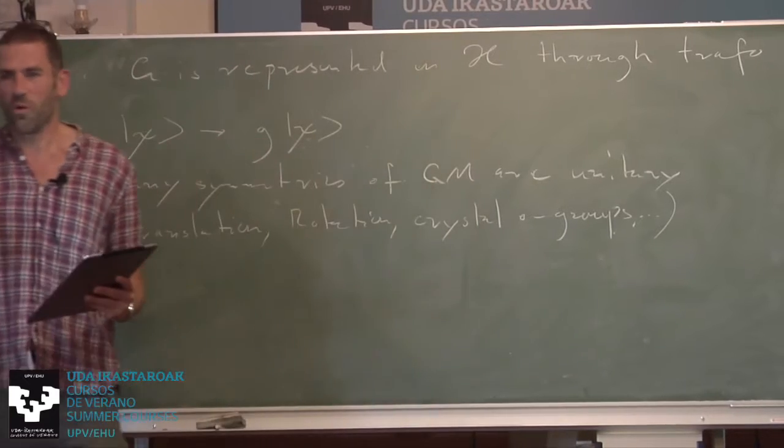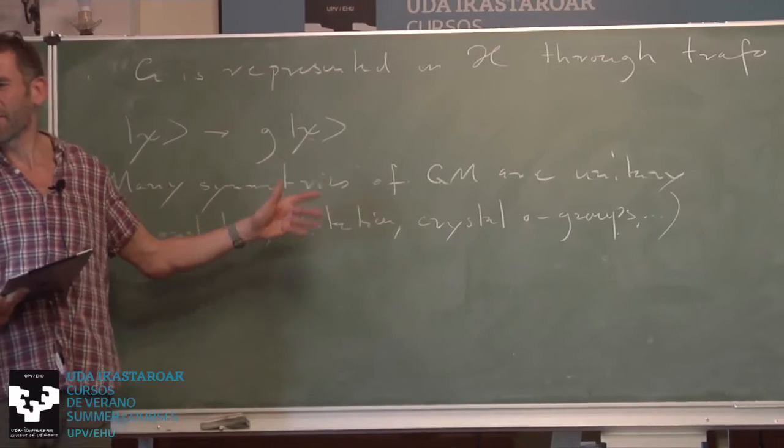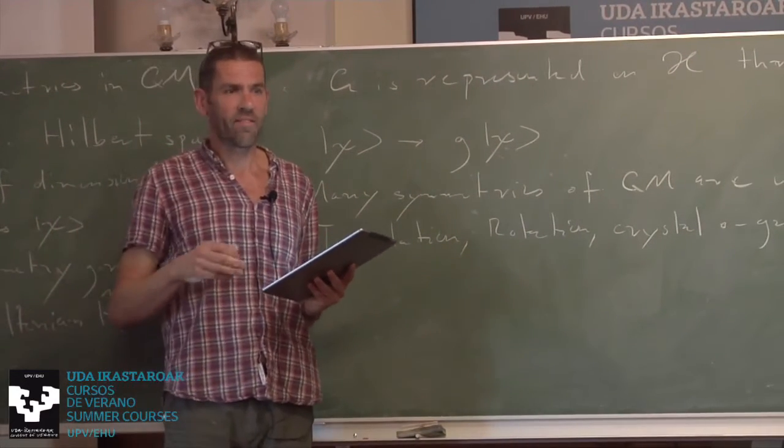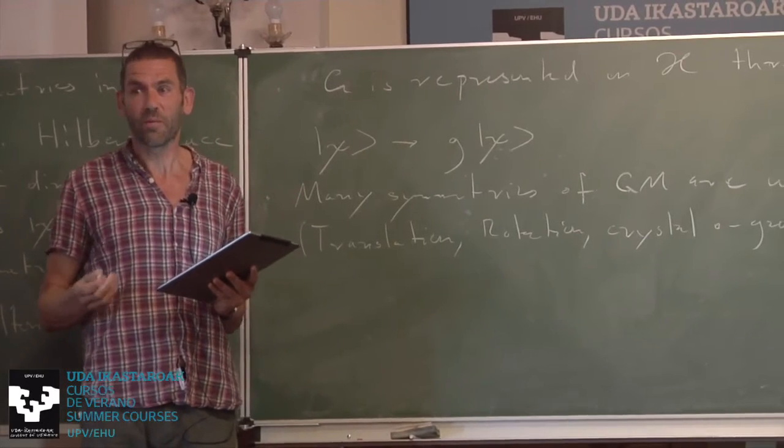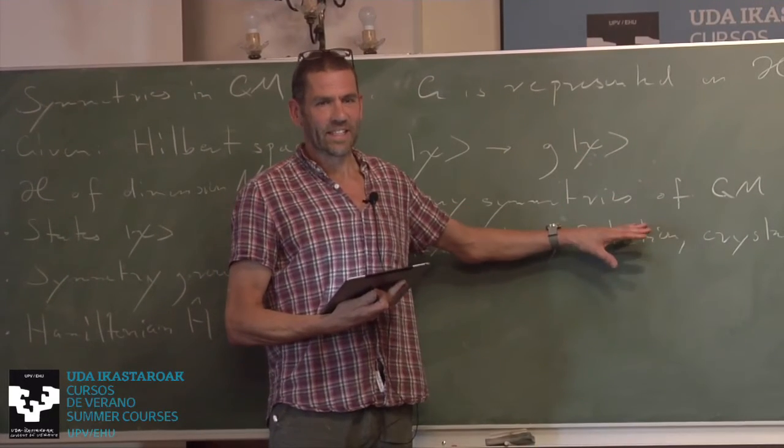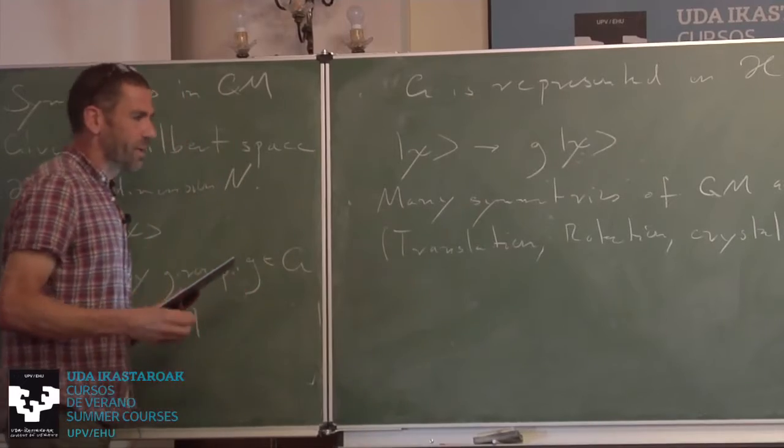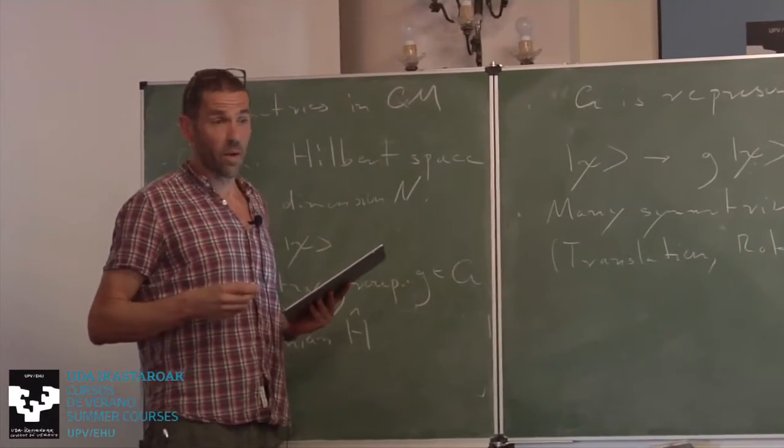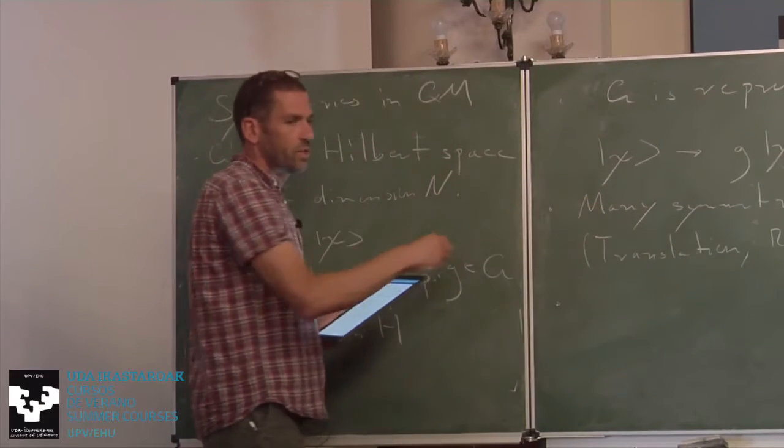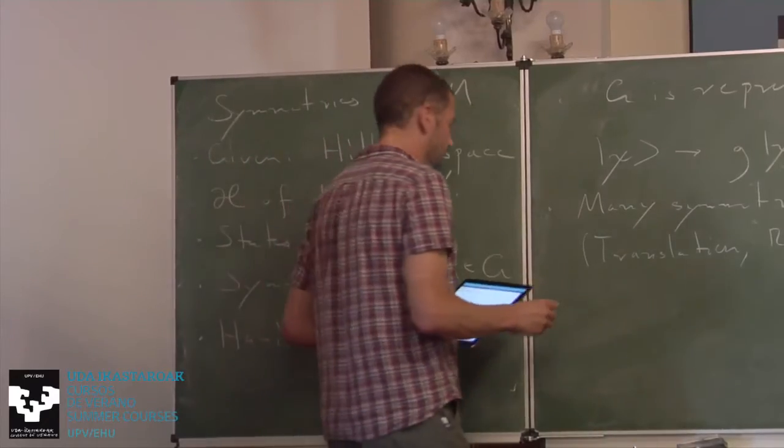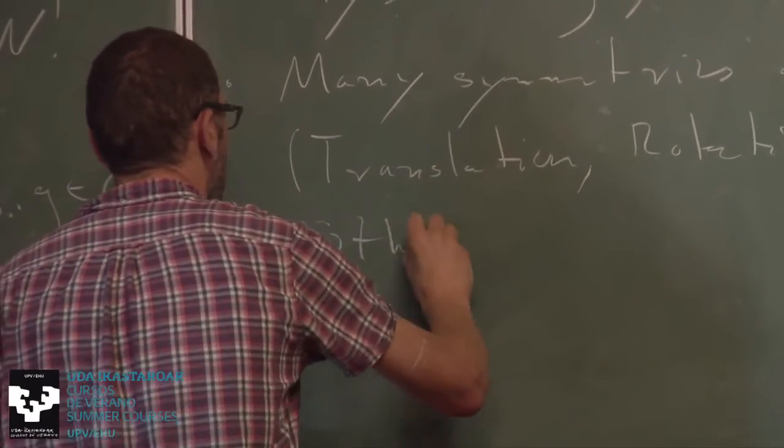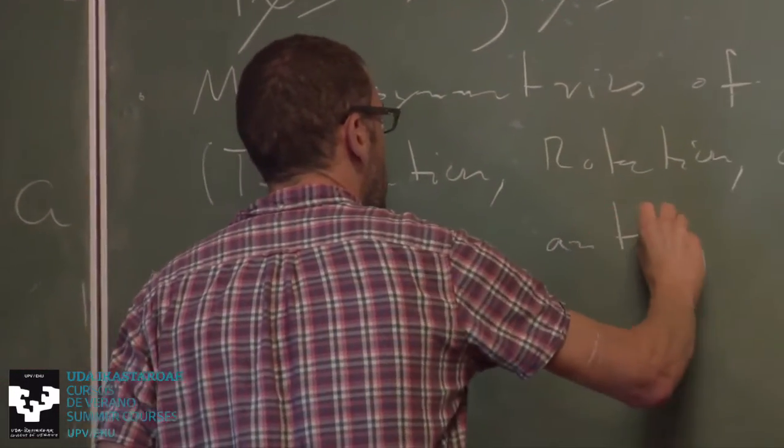And it now turns out that many symmetries in quantum mechanics are unitary, in the sense that this map is a unitary map in the sense of quantum mechanics in Hilbert space. Such unitaries include translations, rotations, crystal point groups, and several others more. A few years ago, 2010ish or so, I would have claimed these unitary symmetries, when it comes to topology, don't matter too much. But since 2010 and 2011, there has been the advent of crystalline topological quantum matter.